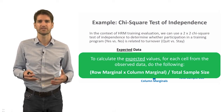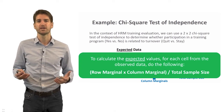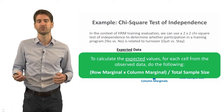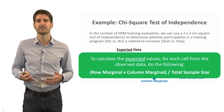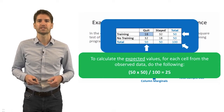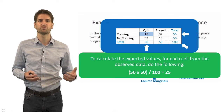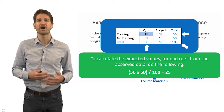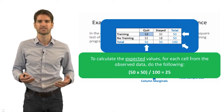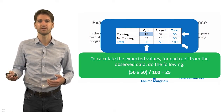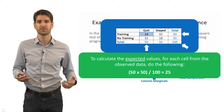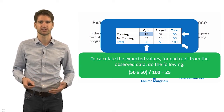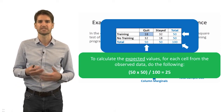The actual formula for calculating expected values is: for each cell of interest, take the row marginal corresponding to that cell, multiply it by the corresponding column marginal, and divide by the total sample size. For the upper-left cell — training and quit, observed as 18 — we take the row marginal of 50 times the column marginal of 50, divided by 100, which gives us 25. You repeat this for the other three cells to arrive at all expected values.